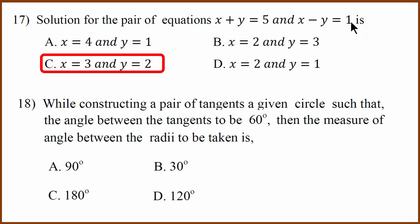Eighteenth question: the angle between tangents is 60 degrees. The angle between the radii plus the angle between tangents adds to 180 degrees. So the angle between the radii is 120 degrees. 120 degrees plus 60 degrees equals 180 degrees. D is the answer.